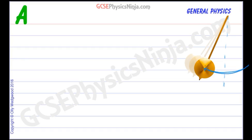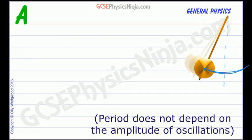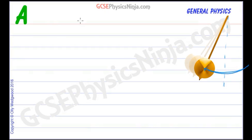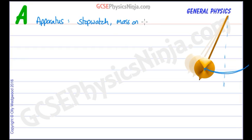This assumes that the period remains the same no matter how much it's swinging, which is approximately true for a pendulum. So the apparatus we simply need is a stopwatch, a mass on a string, plus a clamp and a clamp stand so we can create our own pendulum. We may also want a ruler as well, as you'll see in just a moment.